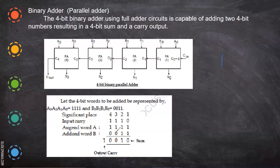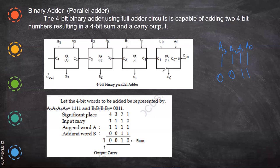Let's take this example: A = 1111 and B = 0011. The bit positions are labeled A0, A1, A2, A3 and B0, B1, B2, B3 respectively. We pass A0 and B0 to the first full adder — it has three inputs, so we pass zero as the carry-in. Adding one plus one gives a sum of zero and a carry of one, which is passed as input to the next full adder.